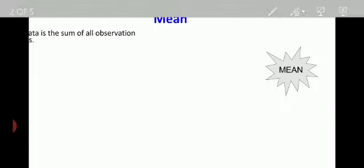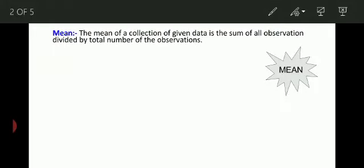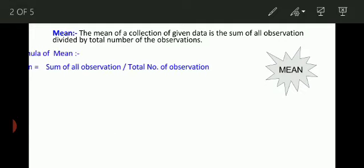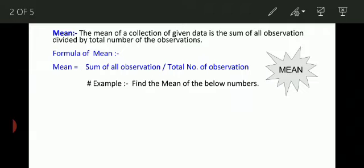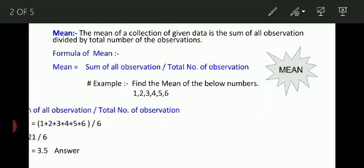Mean. The mean of a collection of given data is the sum of all observations divided by the total number of observations. Here the formula is given. Mean equals the sum of all observations upon the total number of observations.